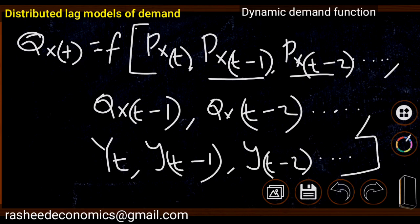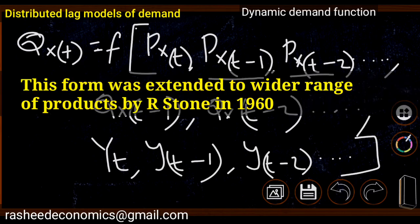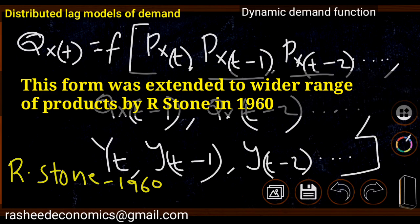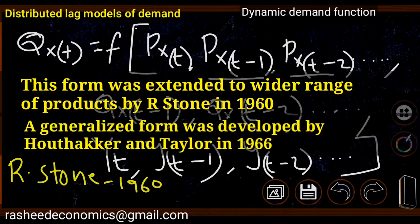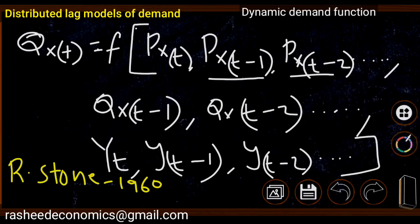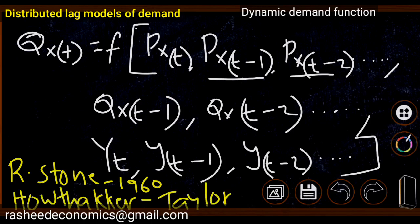This model was extended to a wide range of products by Richard Stern in 1960. A generalized form of the dynamic demand function was later developed by Houthakker and Taylor in 1966. These were the two major developments in dynamic demand function. In our next video, we will be explaining Nerlove's stock adjustment model, and then how Houthakker and Taylor developed it into a detailed dynamic model.